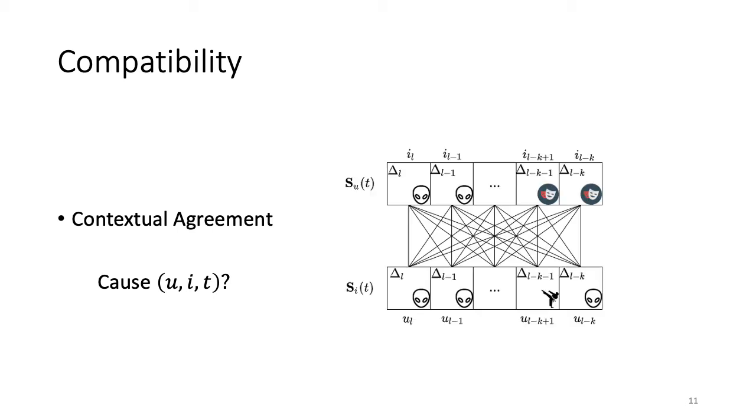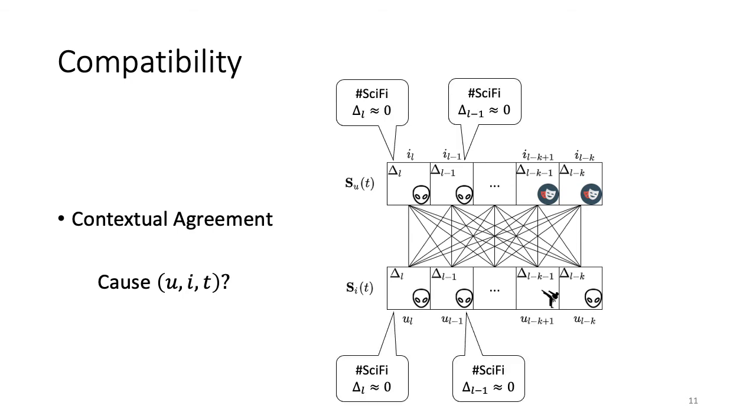The last component of DeepRed learns the compatibility across the recent events of the interacting user and item. The goal is to capture how well the contextualized events agree both in terms of semantics and delta. This is based on the assumption that the interaction event between user u and item i at time t is caused because of some contextual agreement. For example, we see that the most recent events for both u and i are in the same genre sci-fi and the delta is also close to zero. Therefore, to learn this phenomenon, we use a simple attention mechanism.